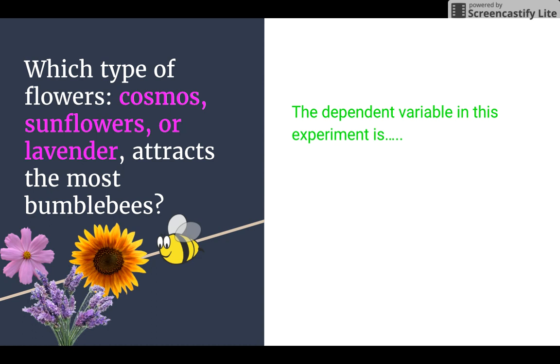The dependent variable is going to depend on that independent variable. And what we're going to be measuring here, recording results are, is about the bumblebees. Which one attracts the most bumblebees? So we're going to be recording the number of bumblebees.